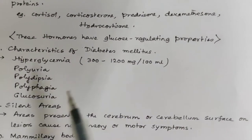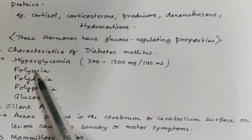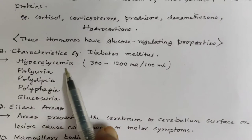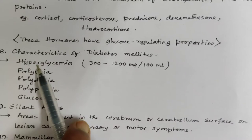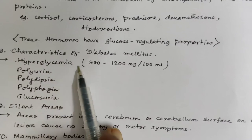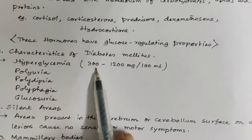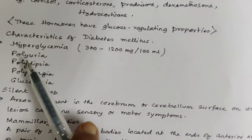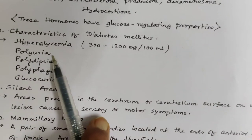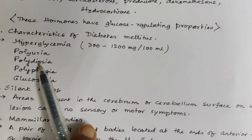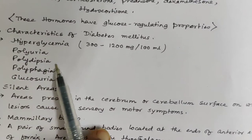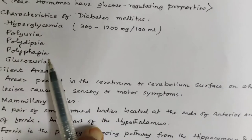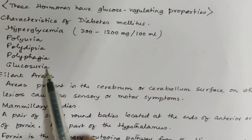What are the characteristics of diabetes mellitus? There are four or five basic characteristics: hyperglycemia — hyper means more, glycemia means glucose in blood — at about 300 to 1200 mg per 100 mL of blood; polyuria (frequent urination); polydipsia (excessive thirst); polyphagia (hunger); and glucosuria, meaning presence of glucose in urine.